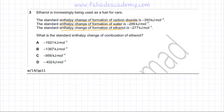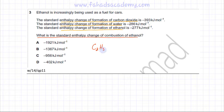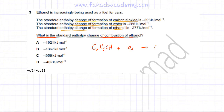What you are asked is: what is the standard enthalpy change of combustion of ethanol? Ethanol is C2H5OH. The standard enthalpy change of combustion means it burns in excess oxygen, completely, producing carbon dioxide (CO2) and water (H2O).